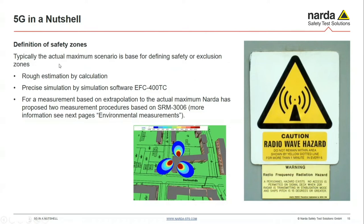There are basically three ways to define safety zones. You can do a rough estimation by calculation — starting with the EIRP (emitted isotropic radiated power) and using approximations — but that is quite rough because it doesn't take into consideration the real situation on a tower or rooftop with hard propagations and reflections. More precise is simulation by respective software, such as the electromagnetic field calculation software 400TC, which allows a more realistic simulation based on solving the Maxwell equations — a correct mathematical approximation of reality.